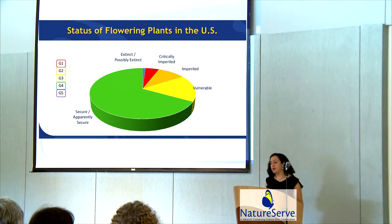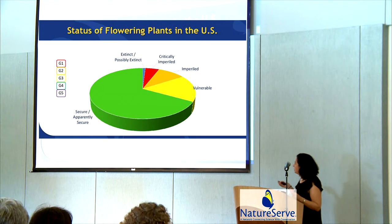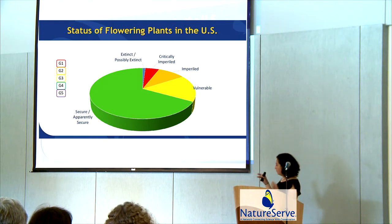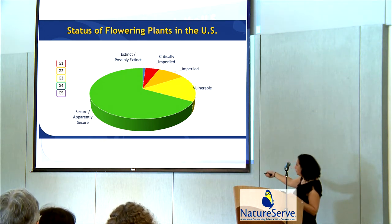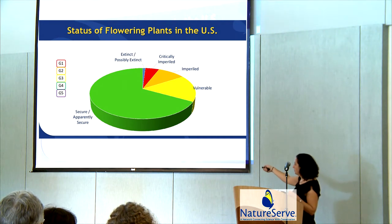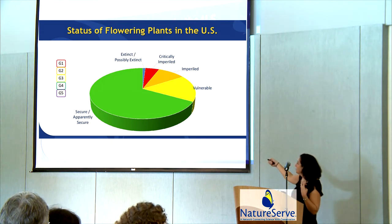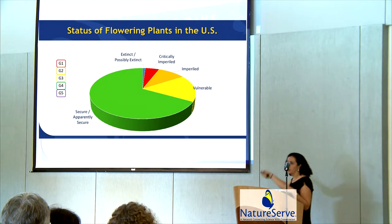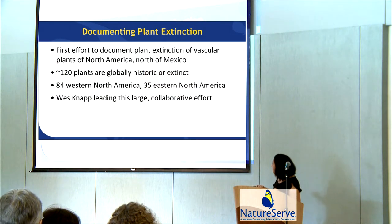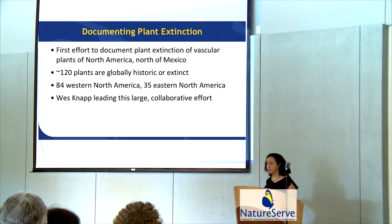Taking a step back to talk about how we're doing in terms of plant conservation in the U.S.: this pie chart shows the status of flowering plants in the U.S. The good news is that most plants are in the G4-G5 category — secure and apparently secure. However, plants that are G1, G2, and G3 comprise almost a third of all flowering plants in the U.S.